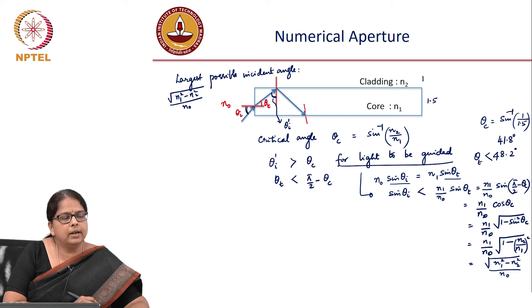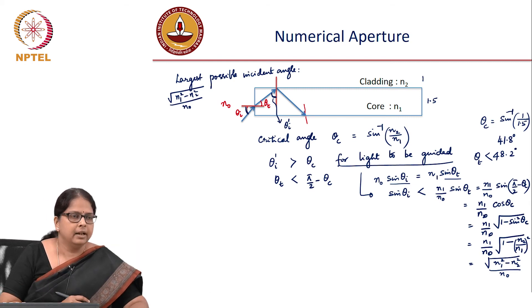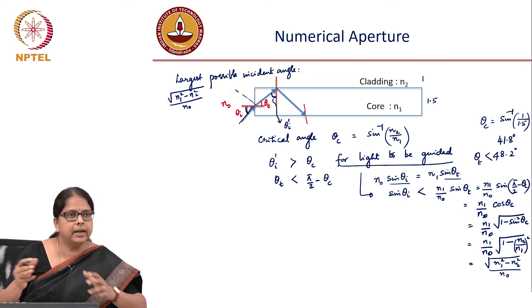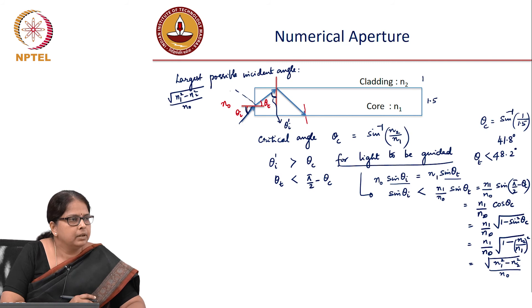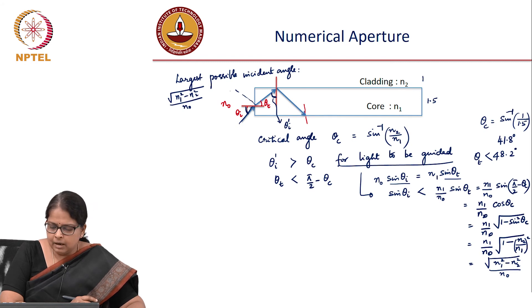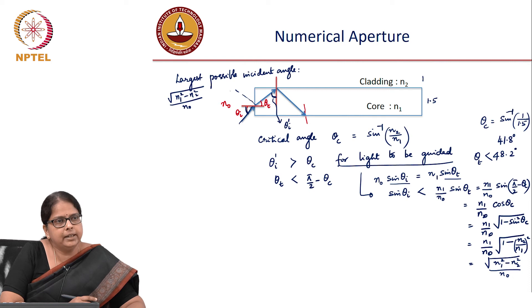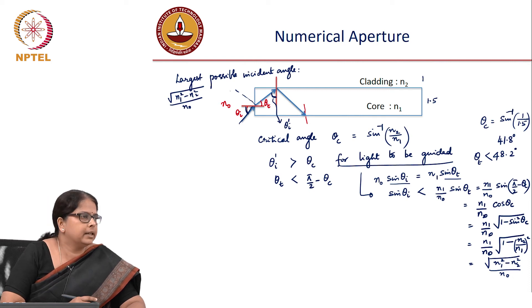This is also called the numerical aperture of the fiber, the collection angle. Any light coming within this cone can be guided into the fiber. Of course, this is something you've done in high school; there's nothing new here.